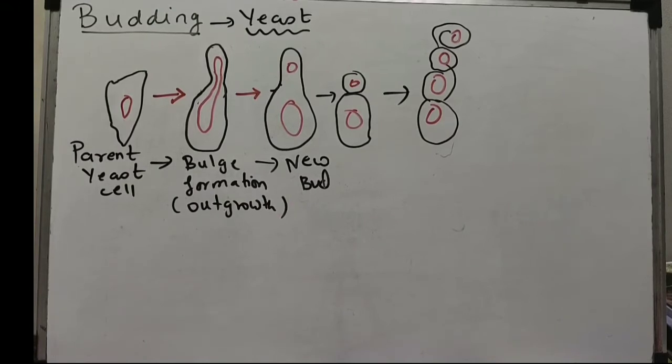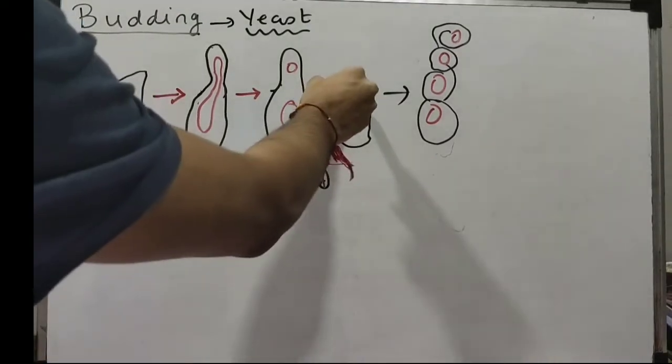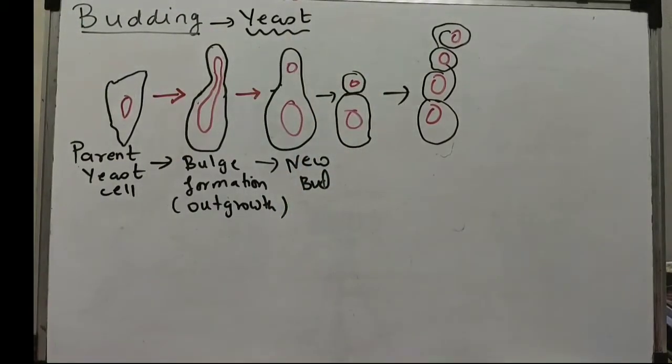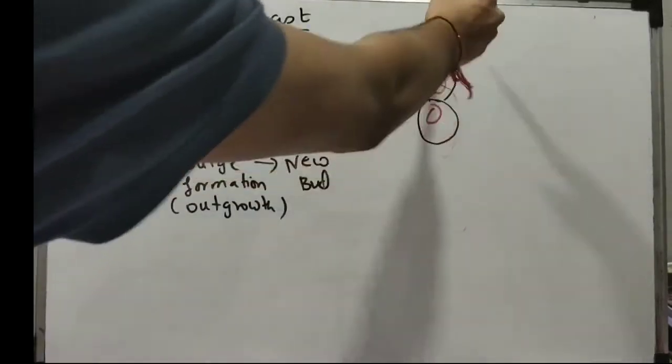Jab usko sufficient growth ho jayegi, just like in us, when we have sufficient growth after nine months there's a parturition period where delivery takes place. Sufficient growth of this will happen. When it's attached to the parent, sufficient growth ho jayega, it will come out and be removed. In the case of yeast cell, the yeast cell will start forming.